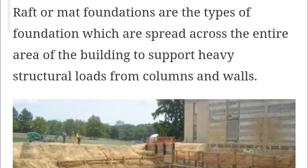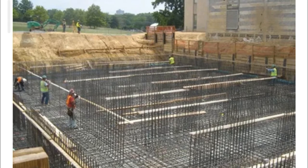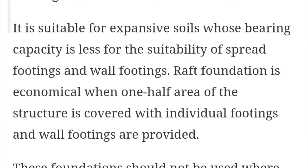The next type is raft or mat foundation. This is a type of foundation spread across the entire area of the building to support heavy structural loads from columns and walls. Mat foundation is used where the load from the structure on columns and walls is very high. It is used to prevent differential settlement of individual footings. A single mat foundation is designed to carry all loads from columns and walls. It is suitable for expansive soils with very low bearing capacity where individual spread footings are not suitable.